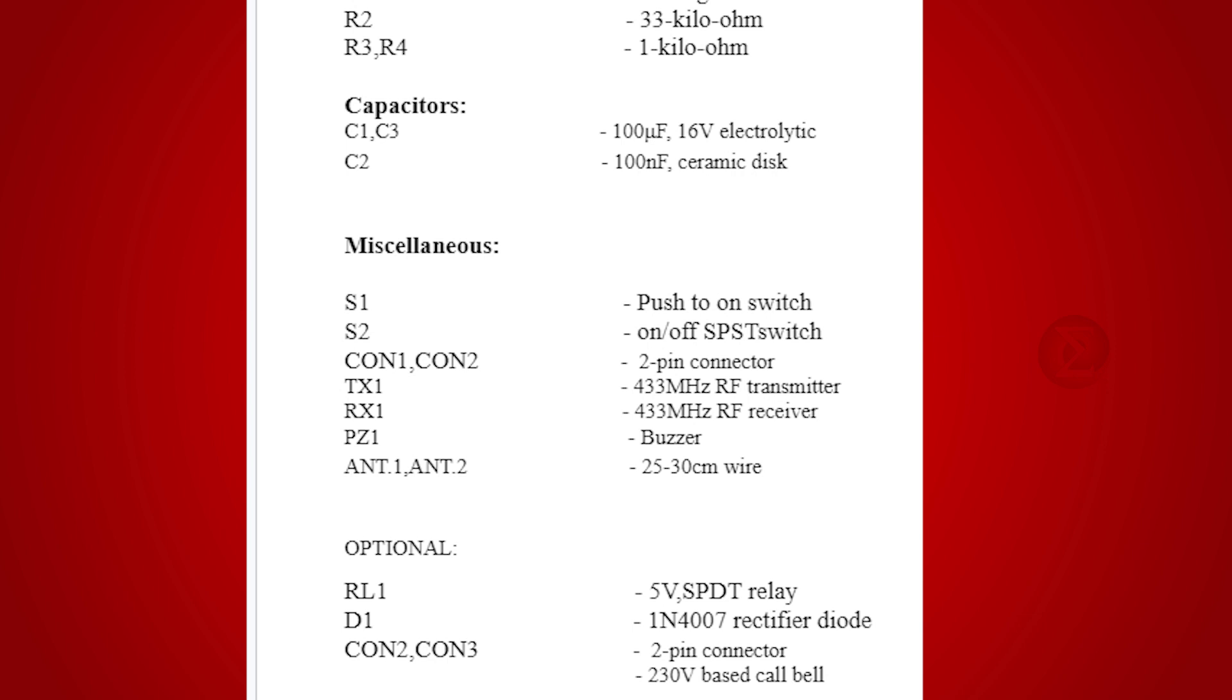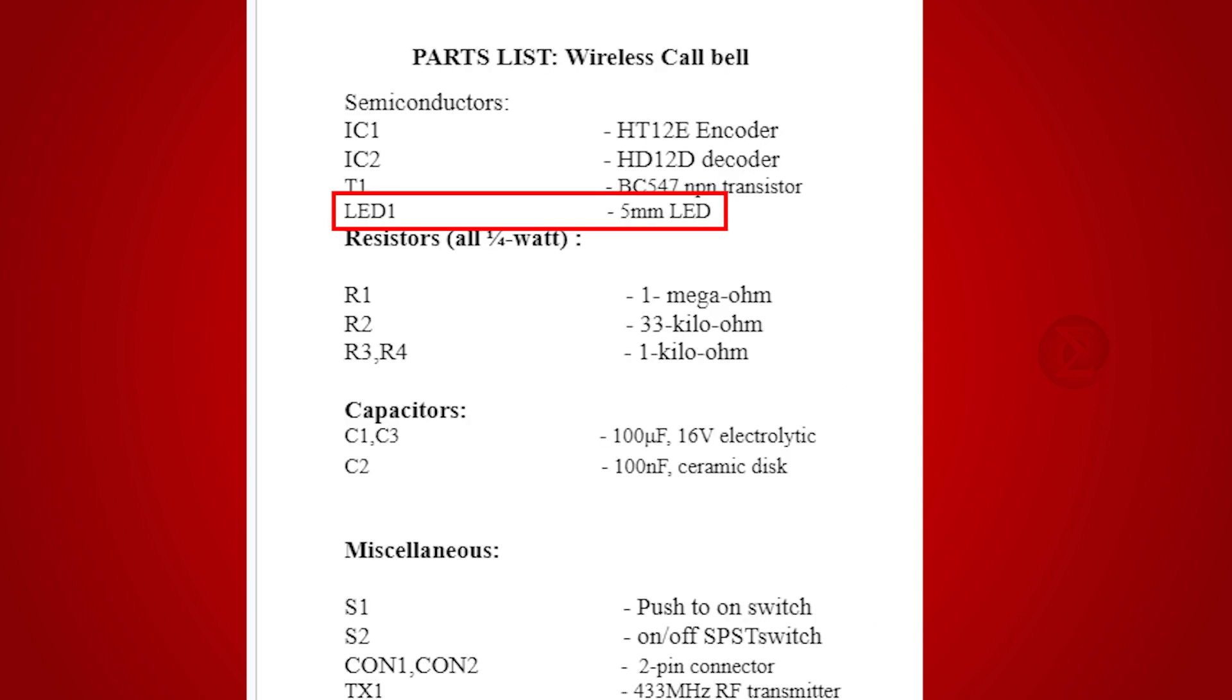For the receiver circuit, you need to have a 433 MHz RF receiver to receive the signal, a buzzer that indicates ringing of the bell, a 5mm LED to indicate that signal is received wirelessly, and HT12D decoder IC.